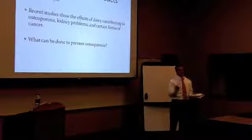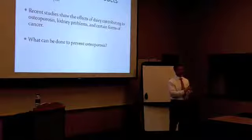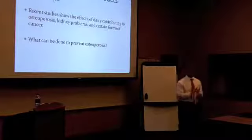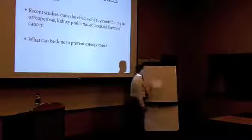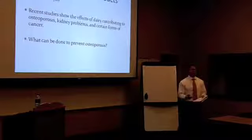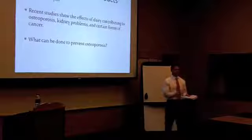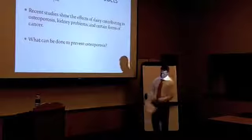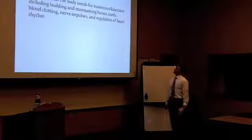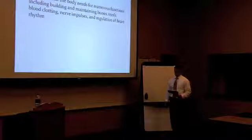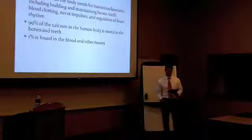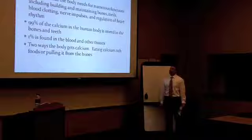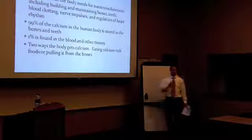In an acidic state, your body leaches calcium out of the bones and magnesium out of the cells to buffer the acidity. So we talked about this last week. So when you take in acid nutrition, processed foods, sugars, pop, caffeine, that creates an acidic state in your body, so your body immediately goes into survival mode because it's smart and it's trying to save your life. So it leaches alkaline buffers out of your body, which is calcium out of the bones and magnesium out of the cells to buffer the acidity. That causes osteoporosis. What is calcium and why do we need it? Calcium is a mineral that the body needs for numerous functions, including building and maintaining bones, teeth, blood clotting, nerve impulses, and regulation of the heart rhythm. 99% of the calcium in the human body is stored in the bones and the teeth. 1% is found in the blood and other tissues. There's two ways your body can get calcium. By eating calcium-rich foods or pulling it from your bones, which again is that acidic state that pulls it from your bones.